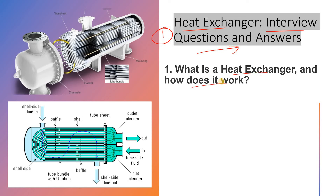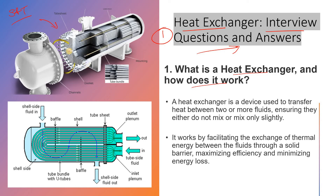This type of heat exchanger shown here is a shell and tube heat exchanger. In a heat exchanger, one side has cold fluid flowing and the other side has hot fluid flowing. Since heat flows from higher temperature to lower temperature, the hot fluid gives its heat to the cold fluid. The hot fluid becomes cooler and the cold fluid becomes hotter.